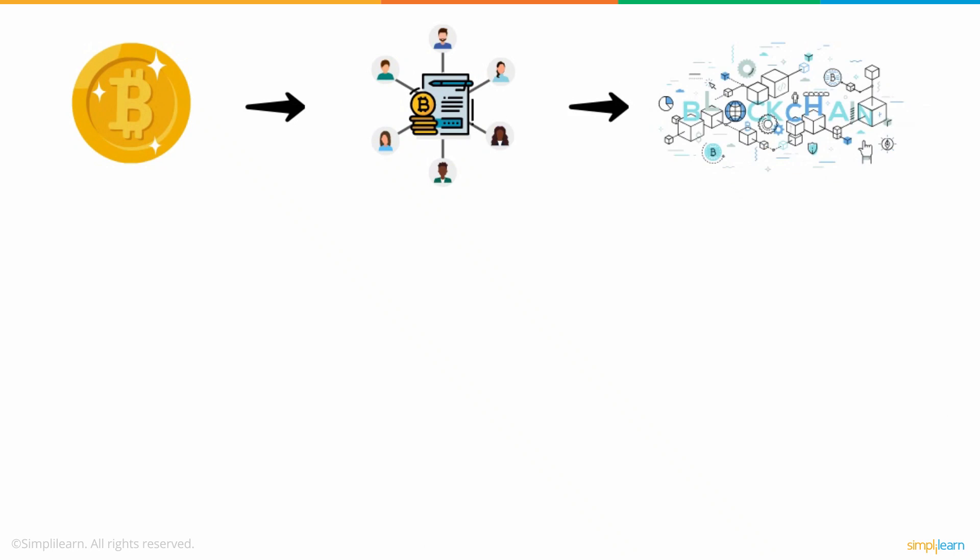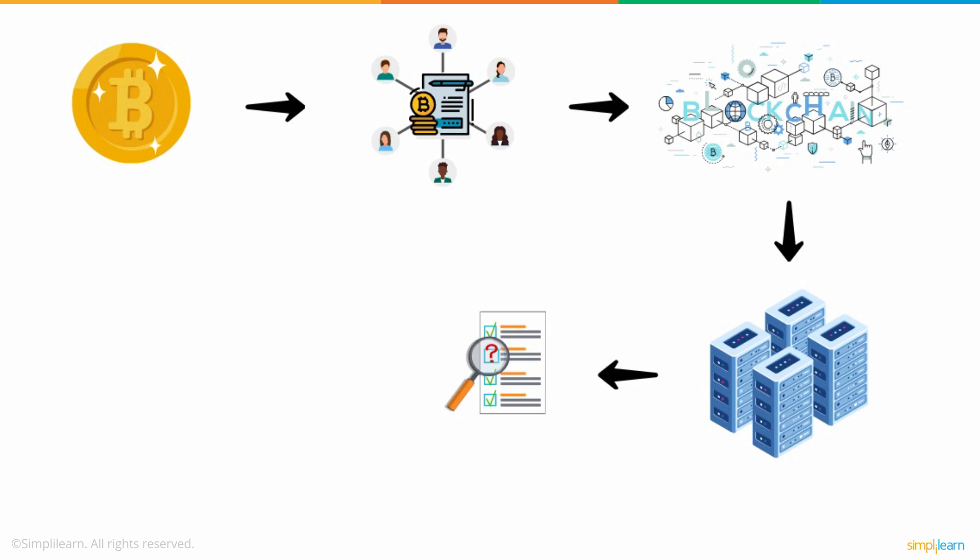Jack further explained that Bitcoin is a transparent ledger without a central authority, and works on blockchain technology. Blockchain is a system for storing data in a way that makes it challenging or impossible to alter, hack, or defraud the system.